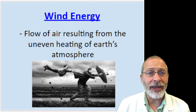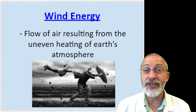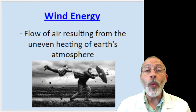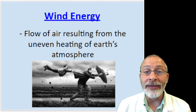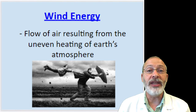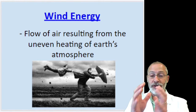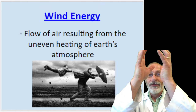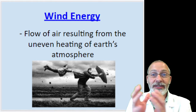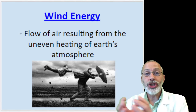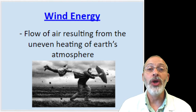Think back to previous topics from previous years. When we studied earth science, we studied how wind forms. Wind is a result of the uneven heating of the earth's atmosphere. When one part of the atmosphere is heating up, hot air rises. Another part of the atmosphere is cooler and sinks. The direction of that horizontal flow on the surface of the earth we call wind.